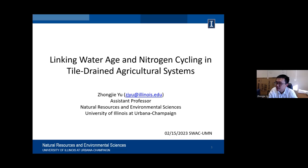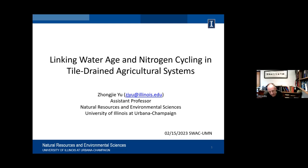He received his PhD at the University of Pittsburgh, working with Emily Elliott, and he has specialized in isotope geochemistry. Zhangji's work uses stable isotope logs and isotopimers to trace reactive nitrogen flow, so he's a real expert in that field. Today he's going to be talking about linking water age and nitrogen cycling in tile-drained agricultural systems — a great topic for our department. Welcome, Zhangji.